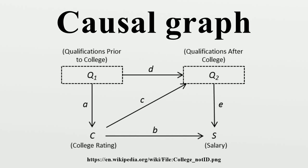In statistics, econometrics, epidemiology, genetics, and related disciplines, causal graphs are graphical models used to encode assumptions about the data-generating process. They can also be viewed as a blueprint of the algorithm by which nature assigns values to the variables in the domain of interest.